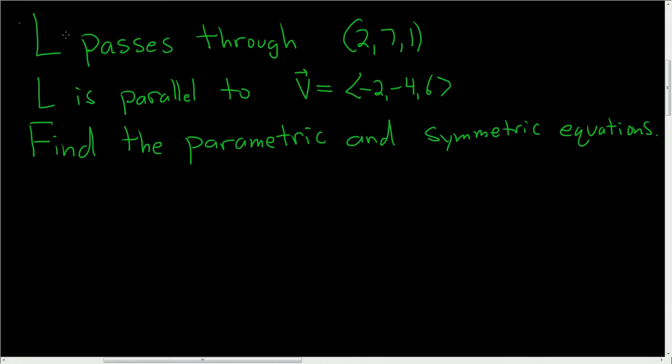We have a line L passing through the point (2,7,1), and it's parallel to this vector here, V, and we're asked to find the parametric and symmetric equations.